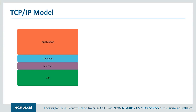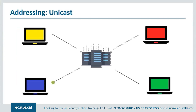Now that we've discussed network architecture models, let's move on to the different ways packets can be addressed. There are three main types: unicast, broadcast, and multicast. Unicast is communication from one point to another — one sender, one receiver — and is still the predominant form of transmission on local area networks and the internet. Ethernet and IP networks support unicast, and most users are familiar with unicast applications like HTTP, SMTP, FTP, and Telnet using TCP.